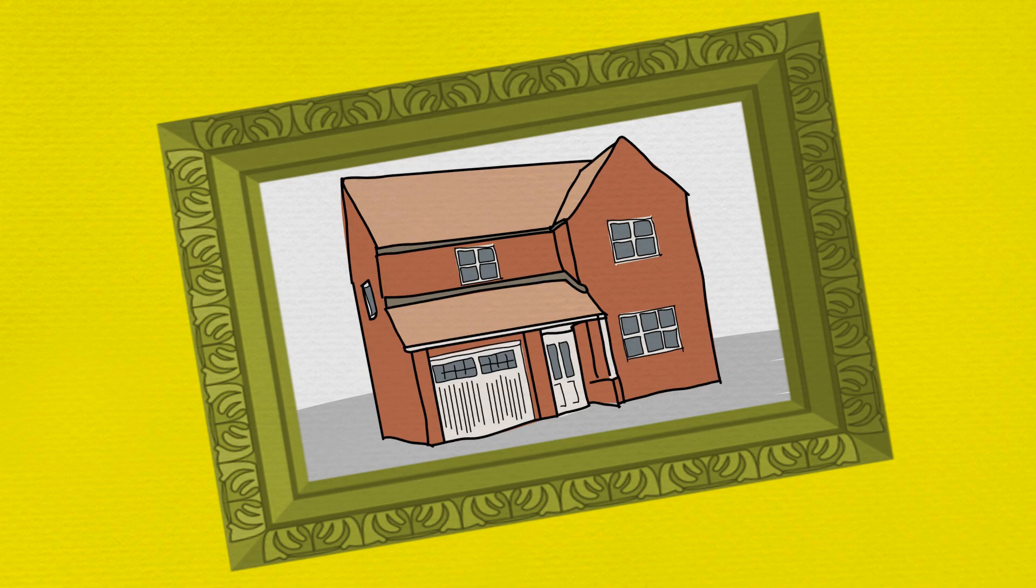For example, a photograph of a house is 2D, but the house itself is 3D.